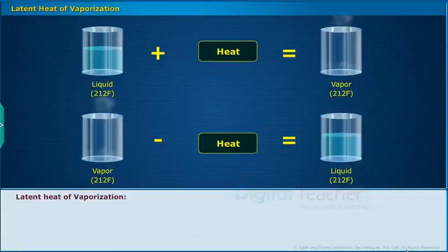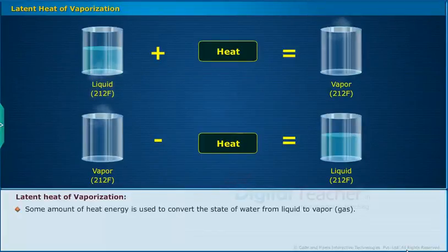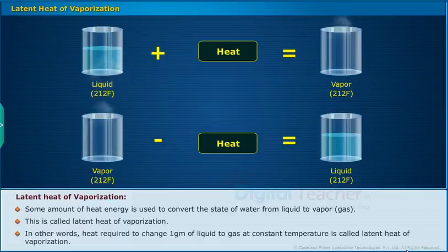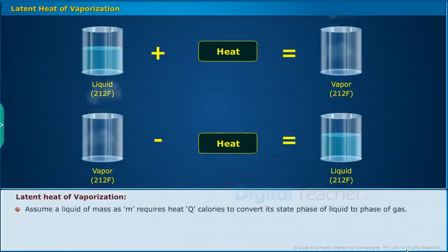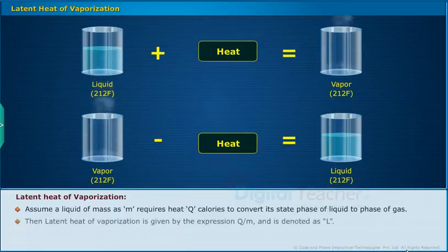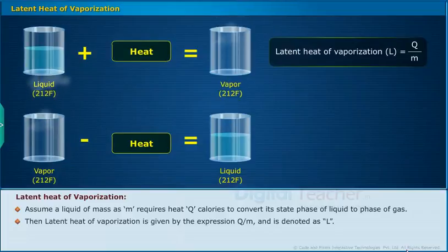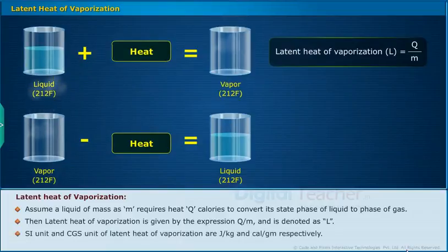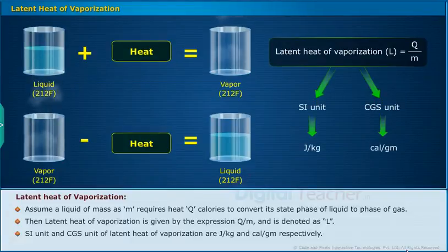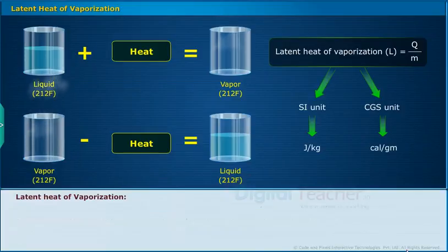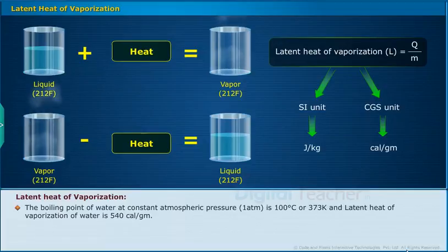Latent heat of vaporization: Some amount of heat energy is used to convert the state of water from liquid to gas. This is called latent heat of vaporization. Heat required to change one gram of liquid to gas at constant temperature is called latent heat of vaporization. If a liquid of mass M requires heat Q calories to convert from liquid to gas phase, then latent heat of vaporization L = Q/M. The SI unit is joule per kilogram and the CGS unit is calorie per gram. The boiling point of water at constant atmospheric pressure is 100°C or 373 K, and the latent heat of vaporization of water is 540 calories per gram.